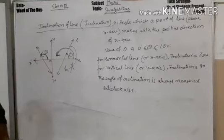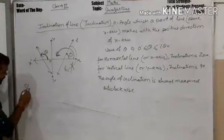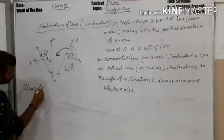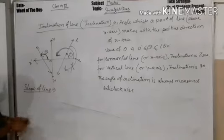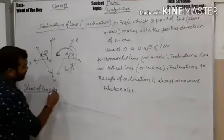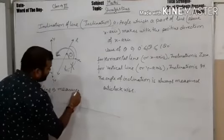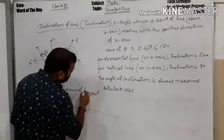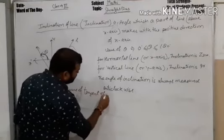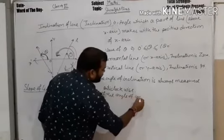If the line is here also, then the angle theta which is more than 90 is to be measured anti-clockwise. Now, another term: the slope of a line. The slope of a line is the measure of the tangent of theta — the tangent of the angle of inclination.